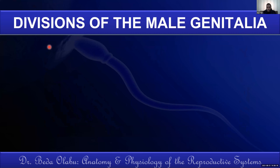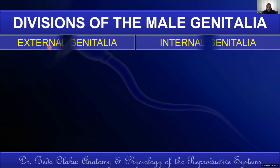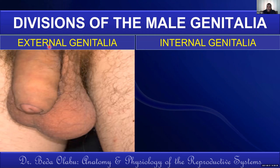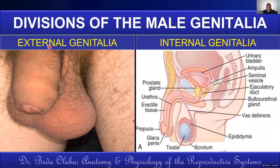In terms of outlining the components of the male reproductive system, we divide them into external genitalia and internal genitalia. The external genitalia refers to the penis and the scrotum. The internal genitalia is divided into three entities: the gonad, the genital ducts, and the sex glands. Those three entities constitute the male internal genitalia, and we'll be looking at them one by one.